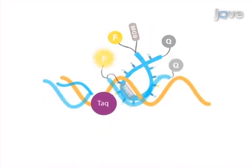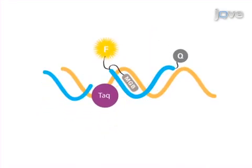During the annealing and extension phases, the primers and probe bind to the target sequence and the quencher is separated from FAM. FAM then gives a strong fluorescent signal.